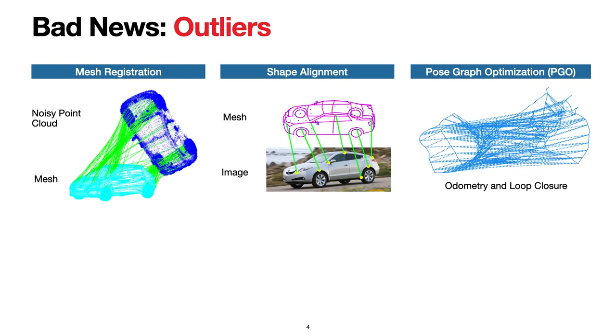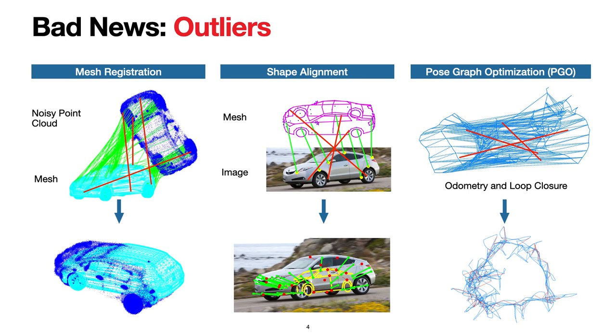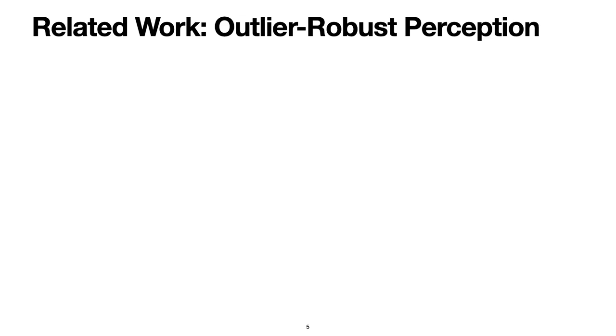However, the bad news is these non-minimal solvers are brittle in the presence of outliers. For example, if we inject incorrect correspondences and incorrect loop closures, the solutions returned by non-minimal solvers are far away from the ground truth. In practice, having a large amount of outliers is very common. Therefore, outlier-robust spatial perception is crucial to real-world applications.